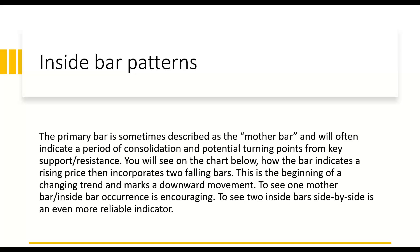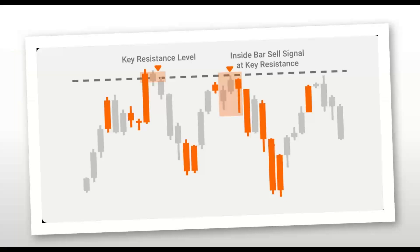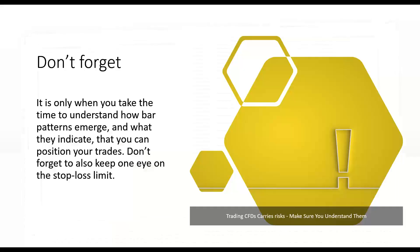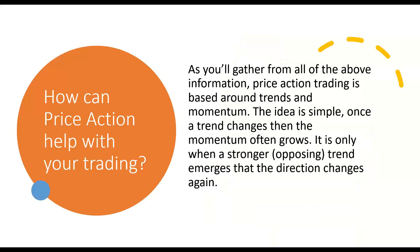This is the beginning of a changing trend and marks a downward movement. To see other mother bar inside bar occurrences is encouraging. But if we combine this with support and resistance level and see the mother bar forming at a support and resistance level with a breakout of a triangle pattern, a head and shoulders pattern, or a double bottom or double top, we have three key pieces of information telling us that we have a potential trade. It's only when you take the time to understand how bar patterns emerge and what they indicate that you can position your trades. Don't forget to also keep one eye on stop loss limits at all times — always look at where your stop loss is and your potential target to calculate your risk/reward ratios.